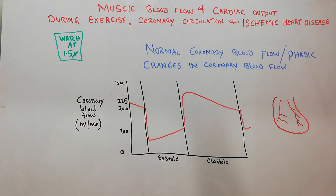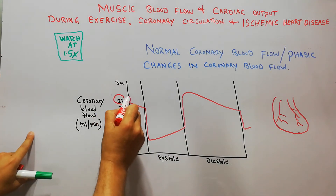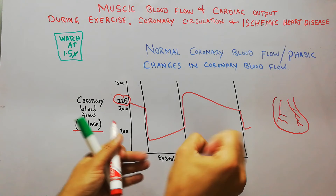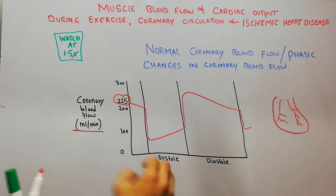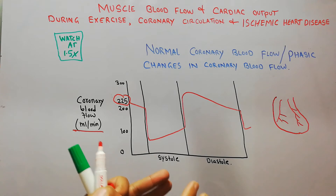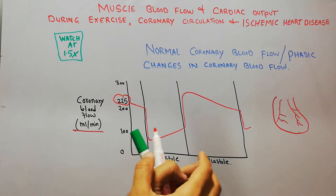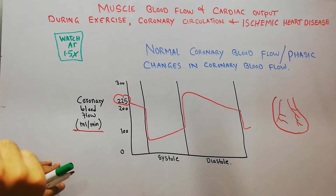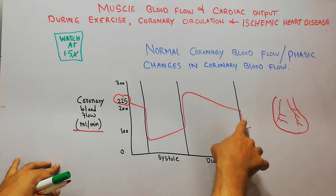The normal blood flow to the heart is around 225 ml per minute. Whenever the heart is contracting during systole, the blood flow to the muscles of the heart decreases. When the heart is relaxing in diastole, the blood flow increases again. Then when the heart contracts again in systole, the blood flow decreases again.